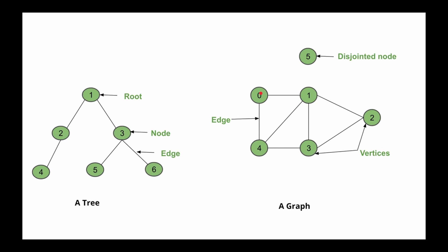For example, in this graph we can see that there are multiple paths from node 0 to node 3. One person can move from node 0 to node 1 to node 2 and then to node 3. Another can go from node 0 to node 1 then to node 3, or from node 0 to node 4 then to node 3, or even node 0 to node 1 to node 4 to node 3. We can also find a disjoint node in a graph — a node that is standing alone and not connected to any other node.